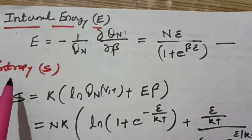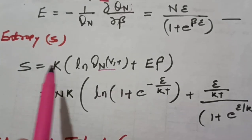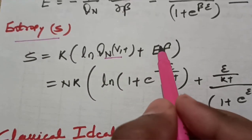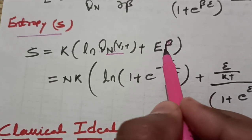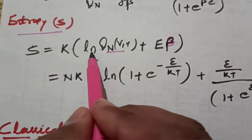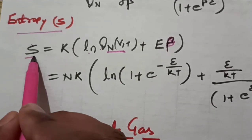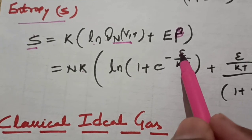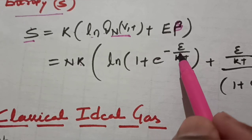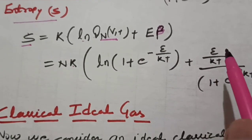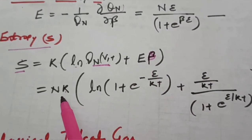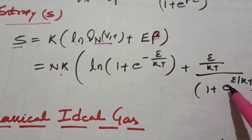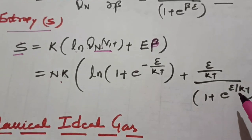If you know the partition function, you can also calculate entropy using S equals k times ln Q(N,V,T) plus E times beta. Substituting all the values, the entropy for the two-level system comes out to be N k times ln(1 + e to the power minus epsilon over kT) plus epsilon over kT divided by (1 + e to the power epsilon over kT).